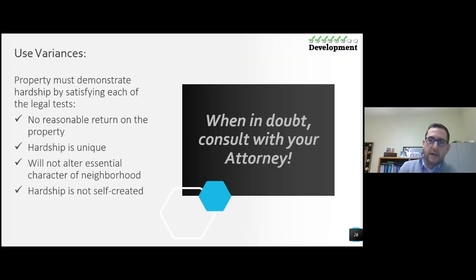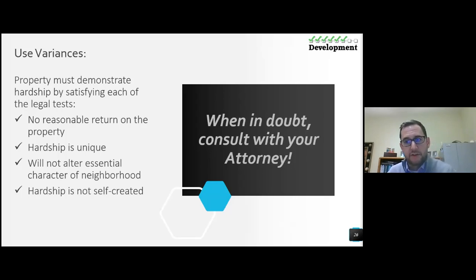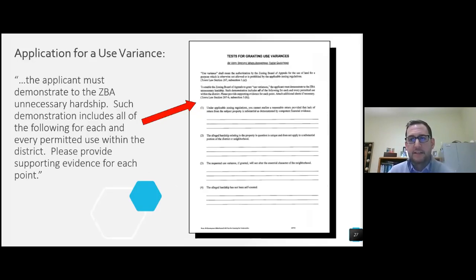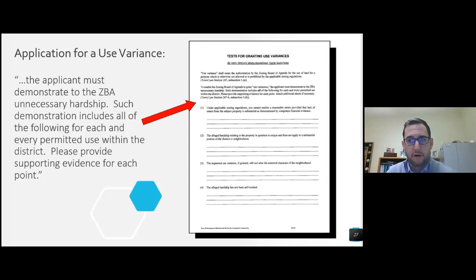There are four criteria for a use variance application: no reasonable return on property, hardship is unique, it will not alter the essential character of the neighborhood, and hardship is not self-created. Those are very difficult to prove, and most times not all four criteria are being met. We would suggest that these criteria be provided in your applications for two reasons: one, the applicant is responsible for filling that information out and giving the board something to review; and then the board reevaluates it as part of their review process.